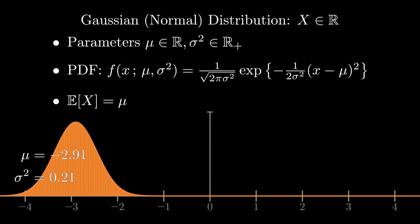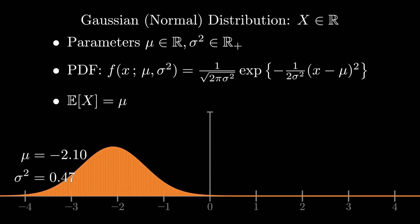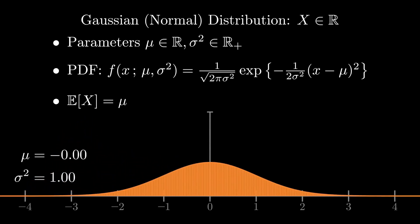In one dimension, it has two parameters, a mean, typically denoted mu, and a variance, often written sigma squared.